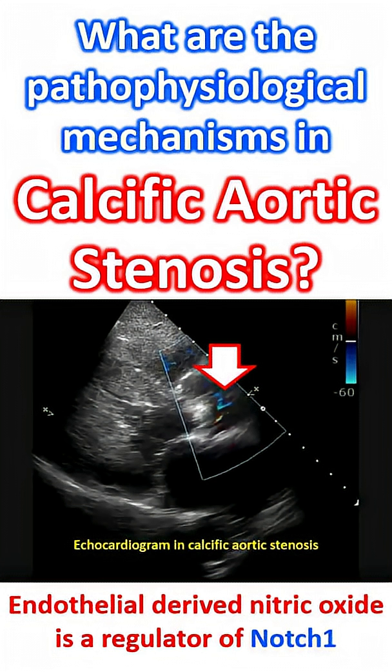Nitric oxide synthase in calcified aortic valves shifts from producing protective nitric oxide to synthesizing harmful reactive oxygen species like superoxide, leading to markedly elevated levels of superoxide and hydrogen peroxide.